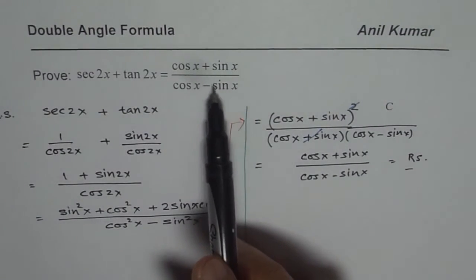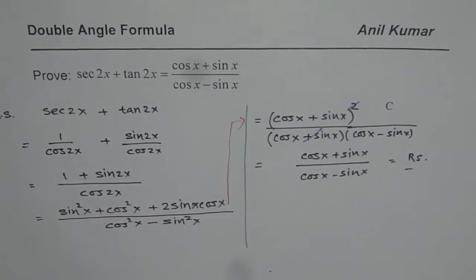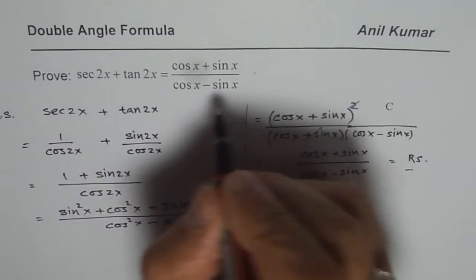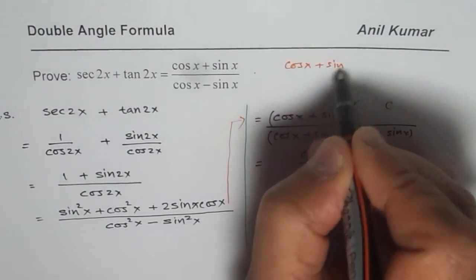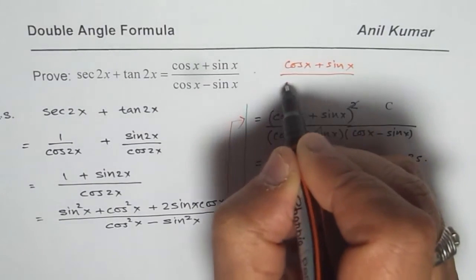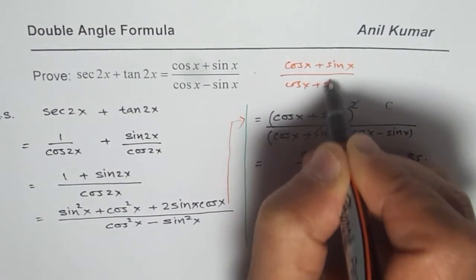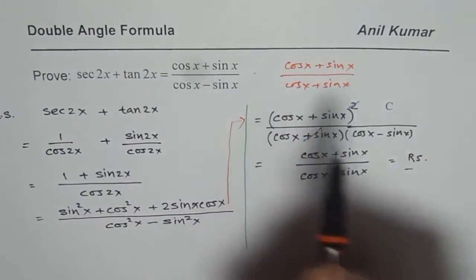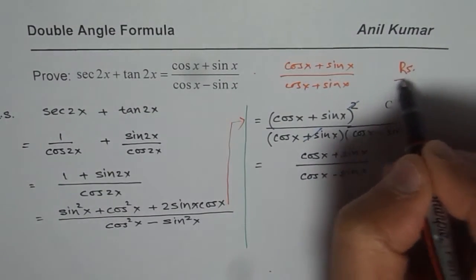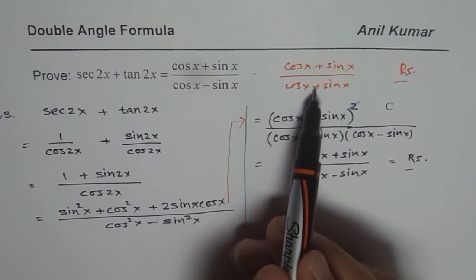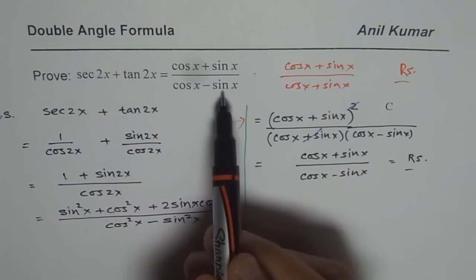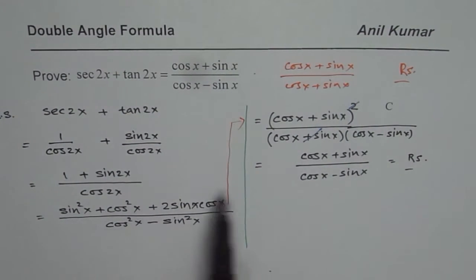You could have started from right side also. In that case you need to rationalize. So in that case you multiply by cos x plus sin x. Multiply and divide by cos x plus sin x. So as an exercise you start from right side and get the left side. You can rationalize, multiply and divide by cos x plus sin x.